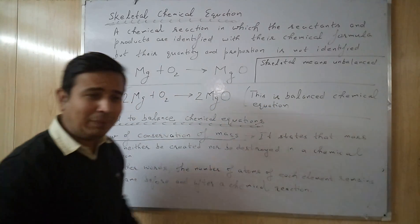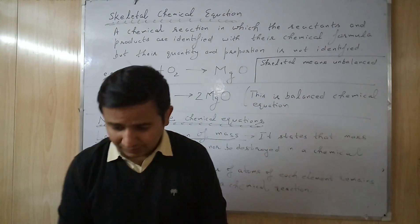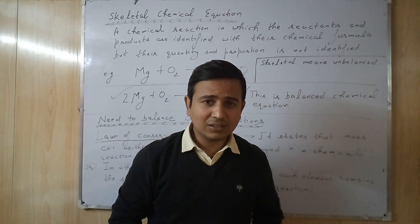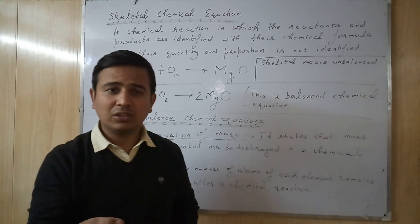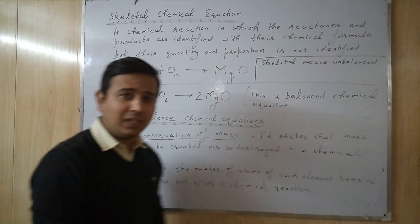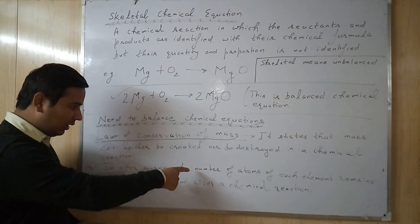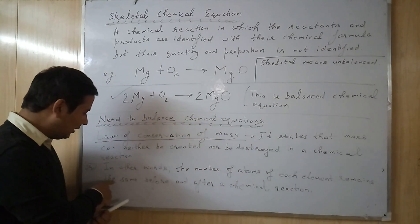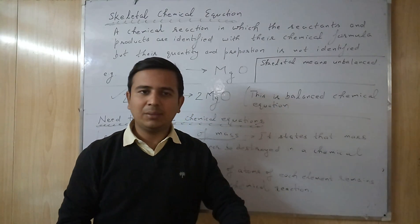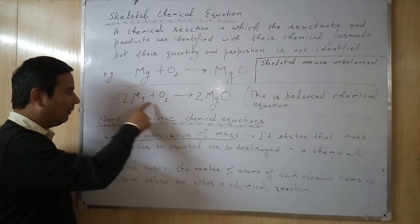So what is the need to balance or need of balancing the chemical equations? Students, the need to balance chemical equations - in your previous class you have studied a law, the law of conservation of mass. What it states? It states that mass can neither be created nor be destroyed in a chemical reaction, or in other words, the number of atoms of each element remains the same before and after a chemical reaction. It means the number of atoms of each element should be same on the reactant side as well as on the product side.